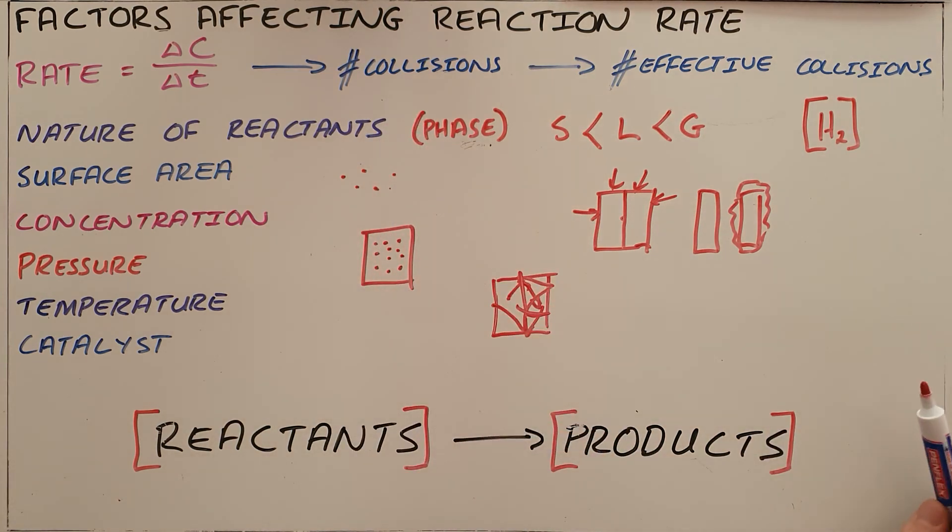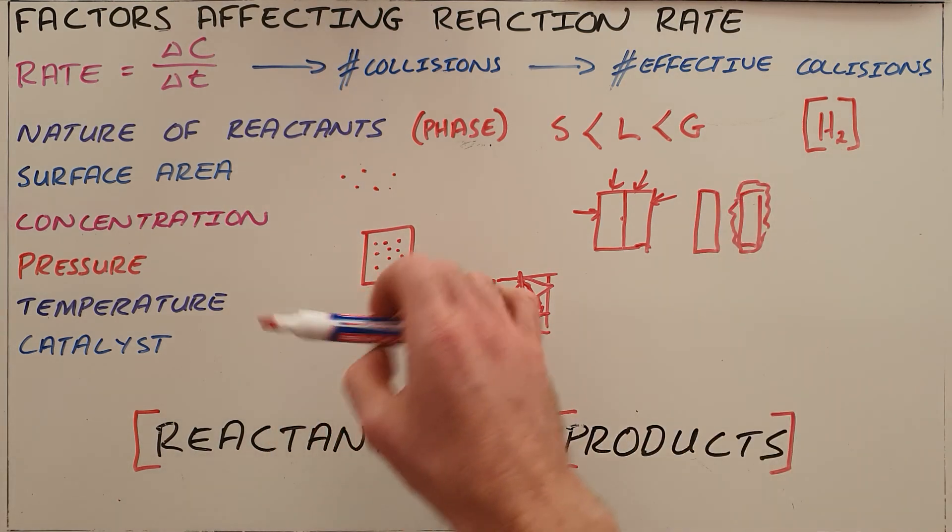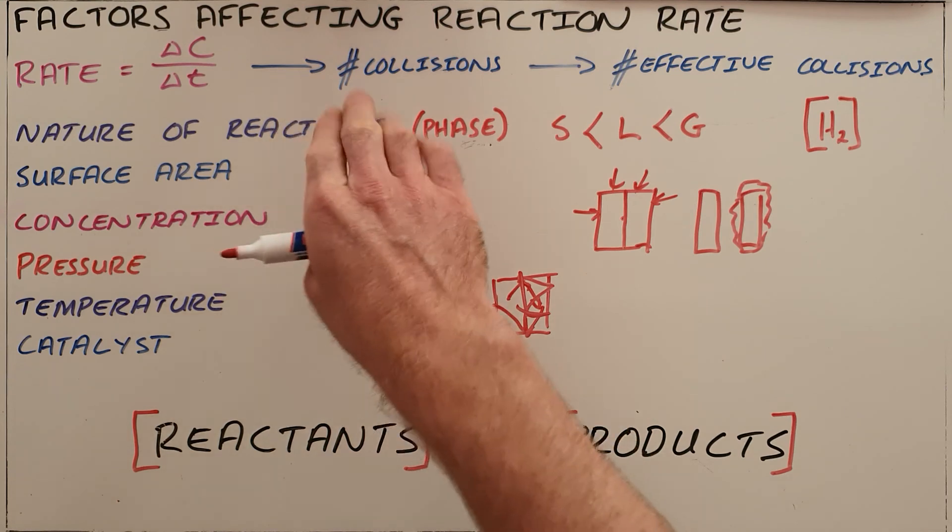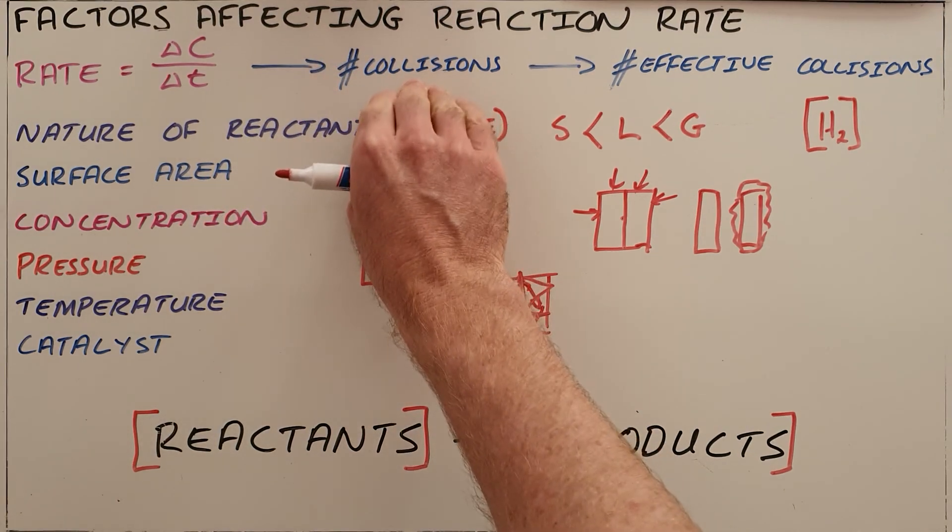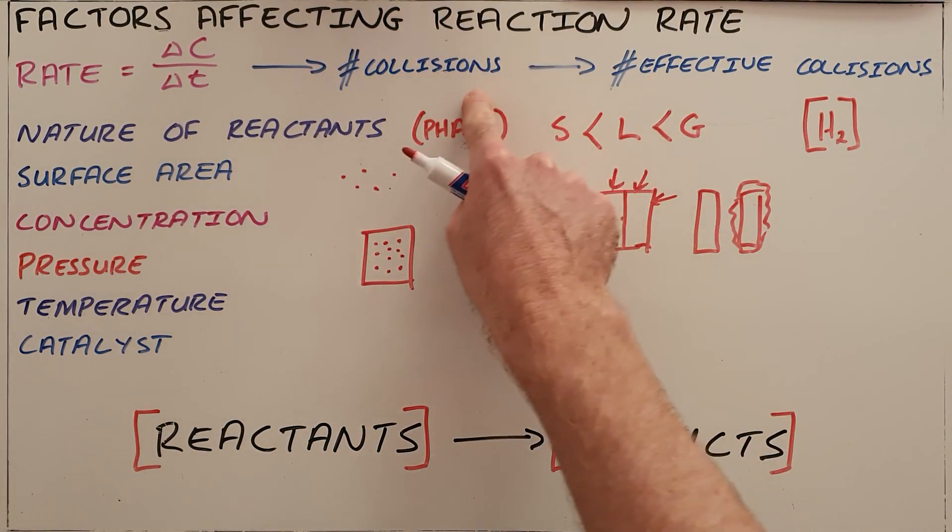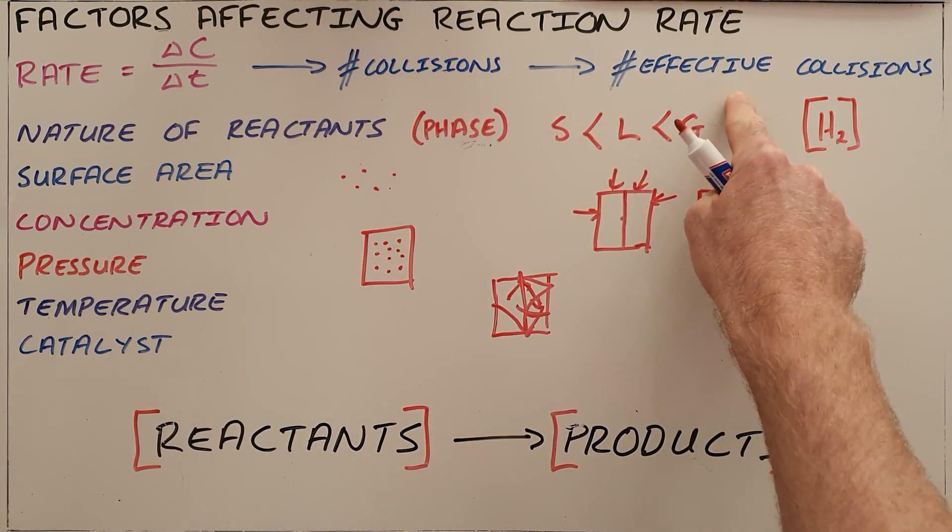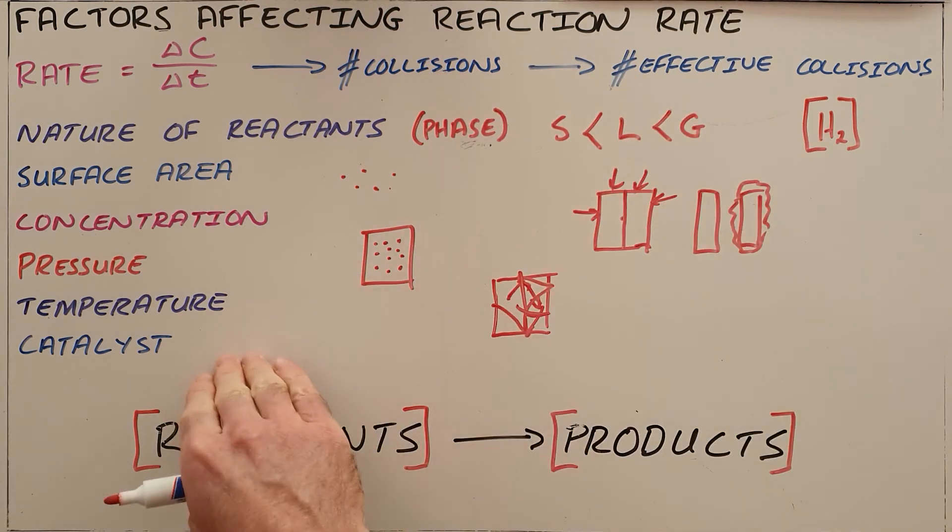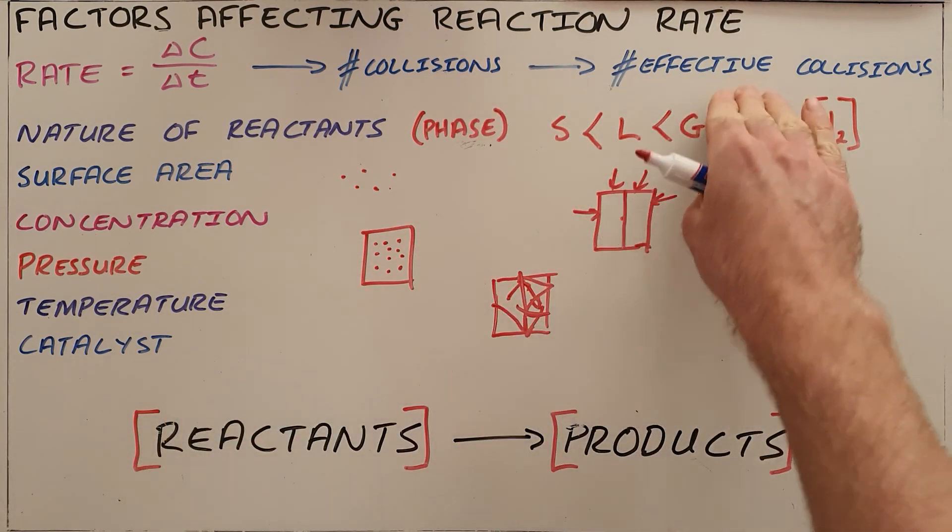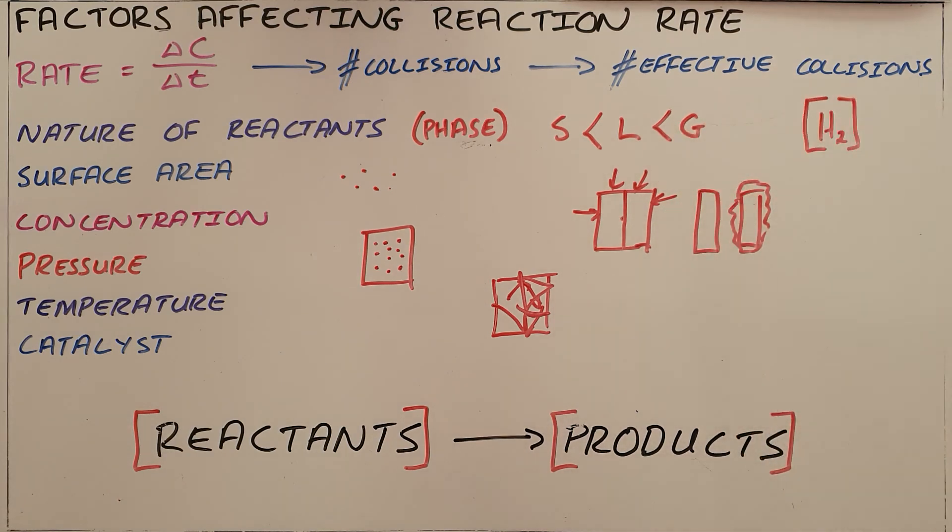When we talk about factors that affect the rate of a reaction, they are all essentially doing the same thing except for the catalyst. These five are increasing the number of collisions. By increasing the number of collisions, they will increase the number of effective collisions. The catalyst, on the other hand, actually increases the rate of effective collisions.